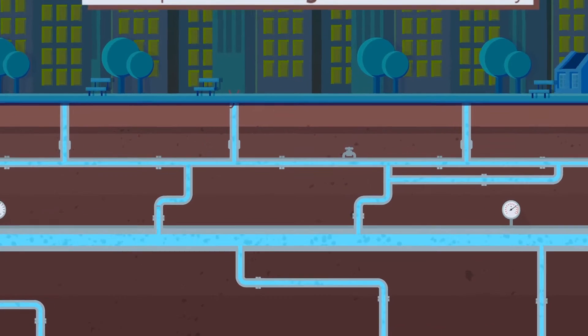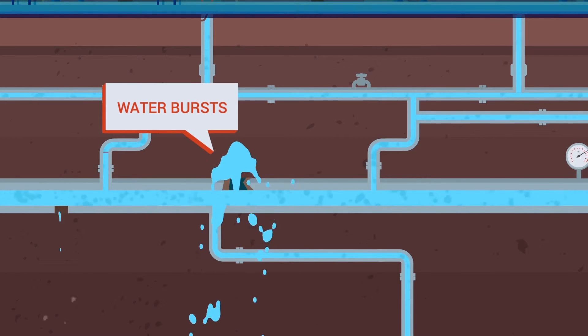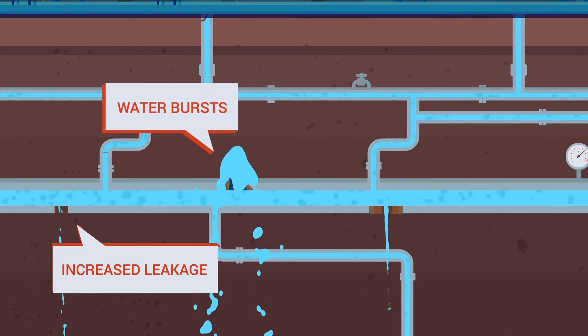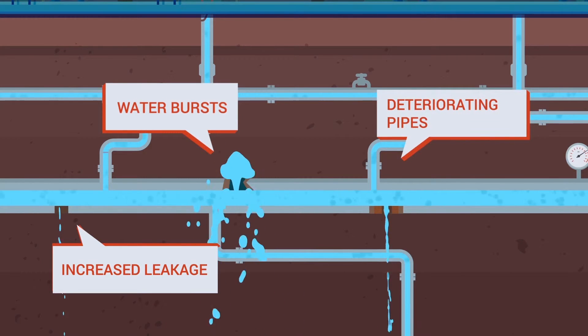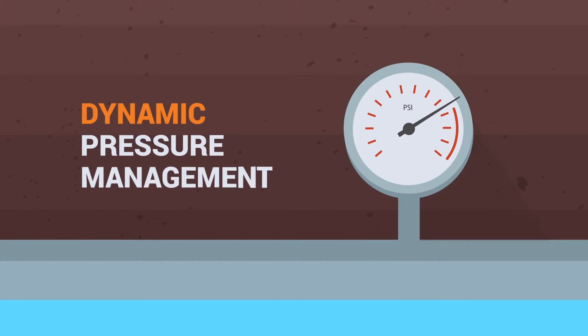This overpressure leads to several problems: water bursts, increased leakage, and deteriorating pipes. Dynamic pressure management is the most cost-effective method to solve these challenges.